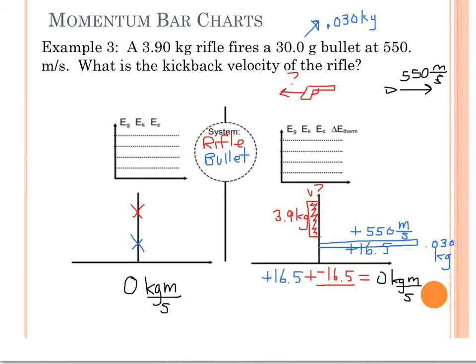So mathematically, algebraically, momentum is mass times velocity. The momentum is negative 16.5. The mass of the rifle is 3.9 kilograms. So the velocity has to be 16.5 divided by 3.9, which is negative 4.23 meters per second. So I have determined that the velocity, the kickback velocity of the rifle, is negative 4.23 meters per second.